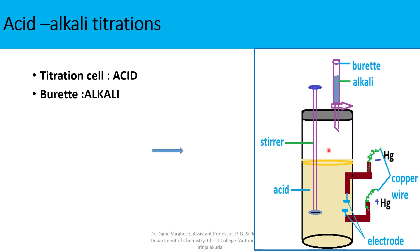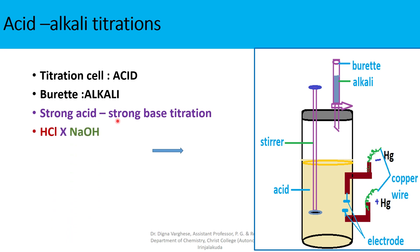The first acid-alkali titration is the strong acid-strong base titration. Here the acid is taken as a strong acid, that is hydrochloric acid, and the base is taken as a strong base, that is sodium hydroxide. So here the titration of strong acid against a strong base is HCl against NaOH.